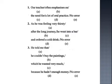Question number two: 'As he was feeling very thirsty (A) after the long journey (B), he went into a bar (C) and ordered a cold drink (D) / no error (E).' Question number three: 'He told me that (A) he couldn't buy the paintings (B) which he wanted very much (C) because he hadn't enough money (D) / no error (E).'